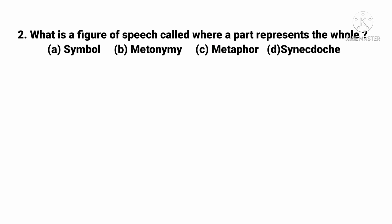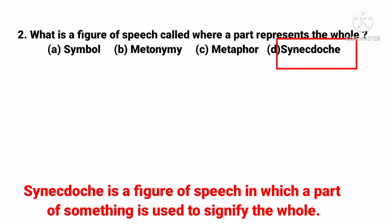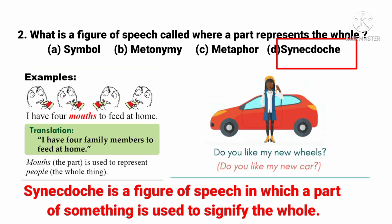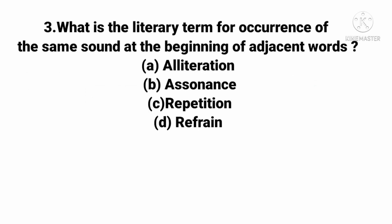The next question: What is a figure of speech called when a part represents the whole? The right answer is synecdoche. Synecdoche is a figure of speech in which a part of something is used to signify the whole. For example, 'I have four mouths to feed at home' — 'mouth' is a part used to represent people. Similarly, 'Do you like my new wheels?' — 'wheels' represents the whole car.